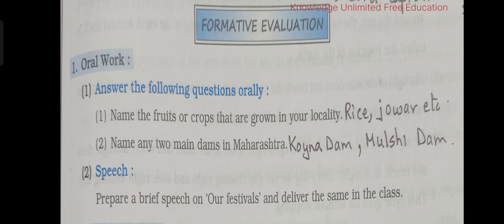Formative evaluation. 1. Name the fruits or crops that are grown in your locality. Rice, Jawar, etc. Children, you can write as per your area — the fruits and crops which grow in your area. You can change the answer as per your locality. 2. Name any two main dams in Maharashtra. Koina Dam, Mulshi Dam.